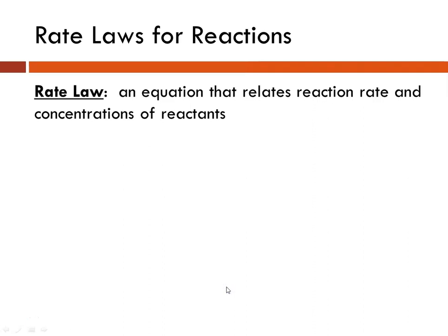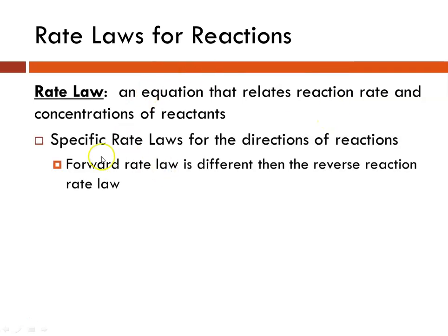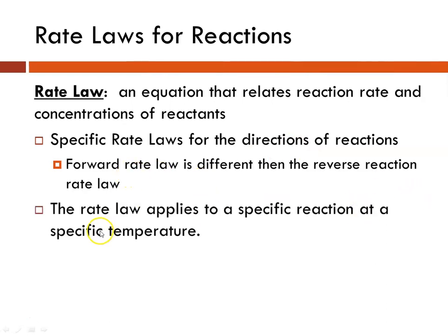Rate laws for reactions, or a rate law, is an equation that relates reaction rate — how fast it proceeds — to concentrations of the reactants. It's very specific. There are specific rate laws for each reaction and for the forward versus the reverse reaction. It also applies to specific reactions at specific temperatures, so different temperatures mean different rate laws.